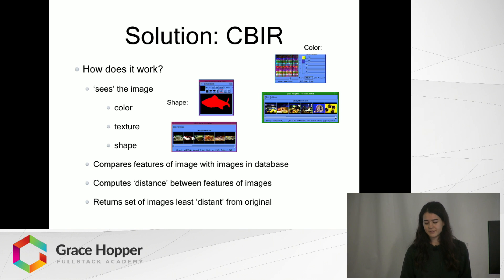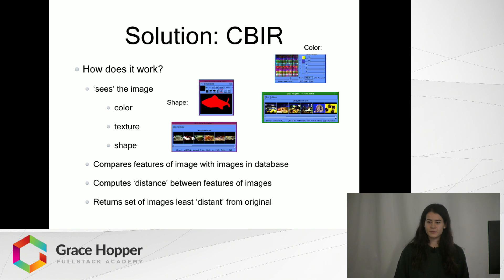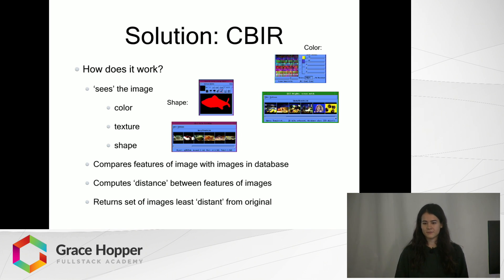So it gets these features and then it compares those features with the same features of other images in the database. There's basically a lot of math that goes on, but ultimately it's able to compute images whose average difference from the original image is the smallest, and then return those.